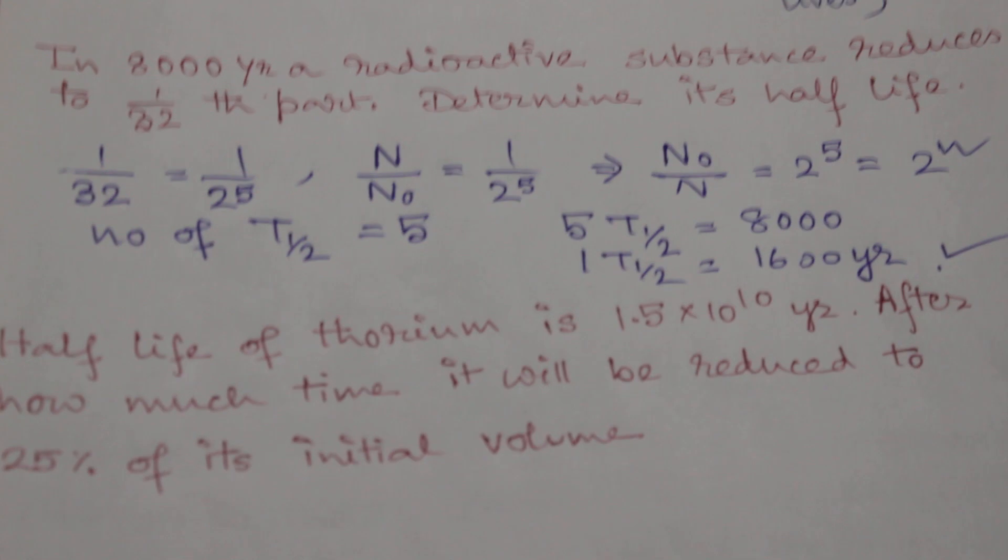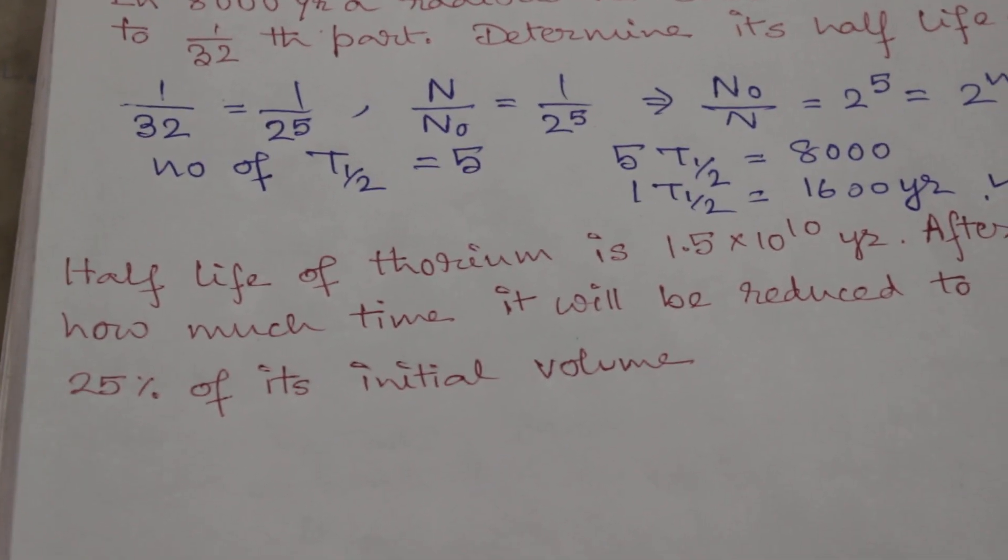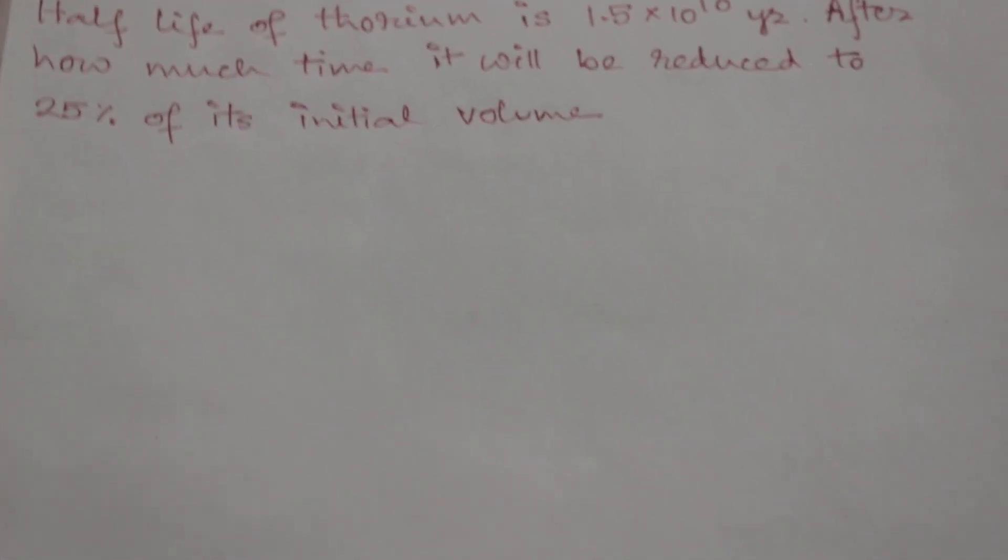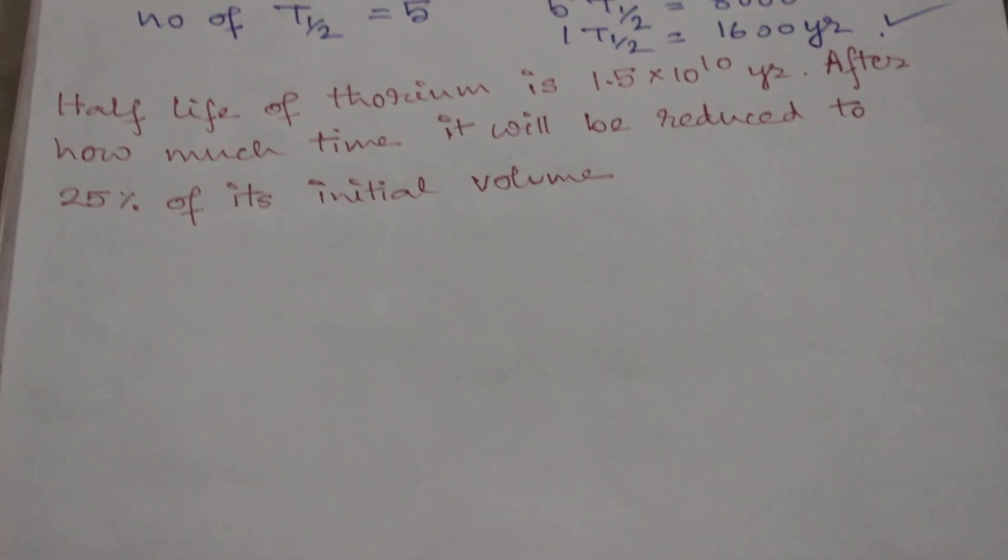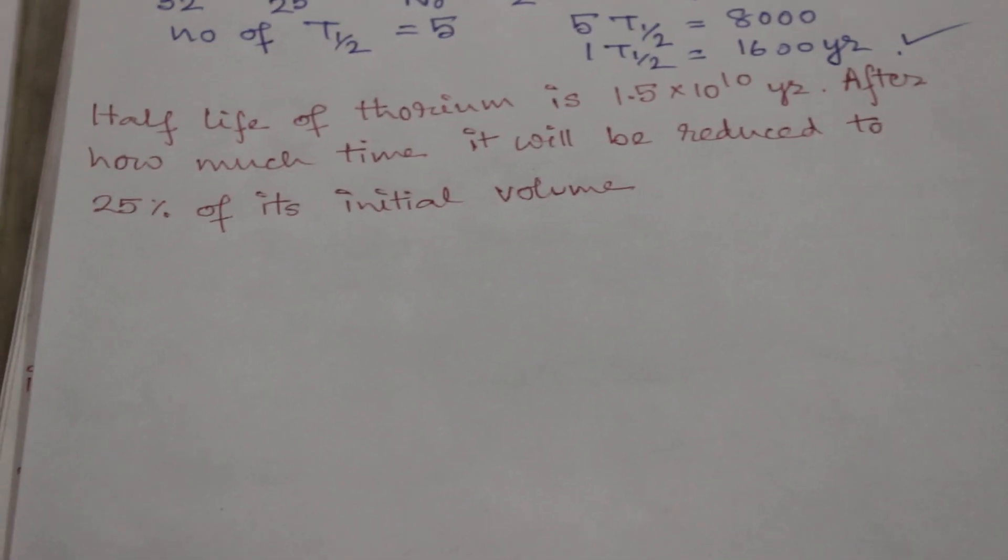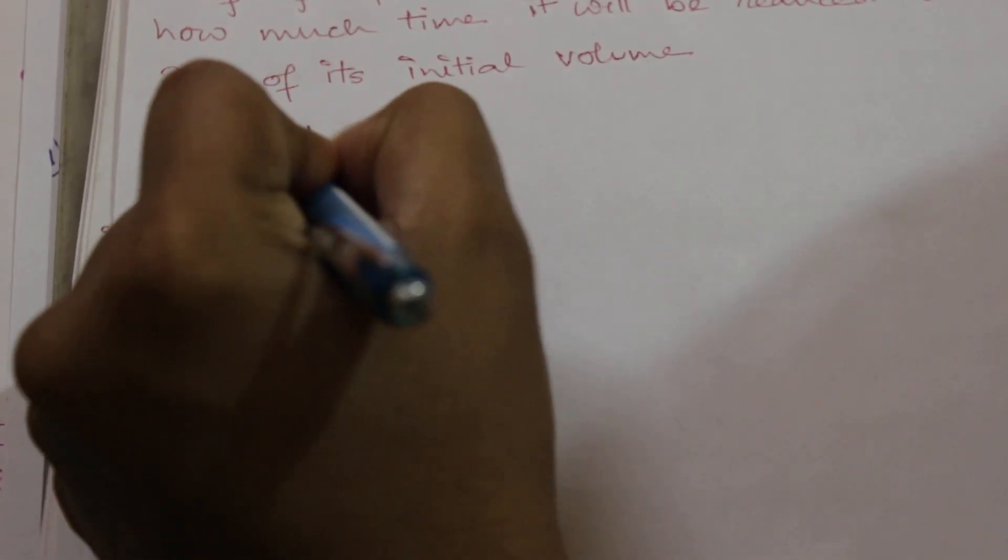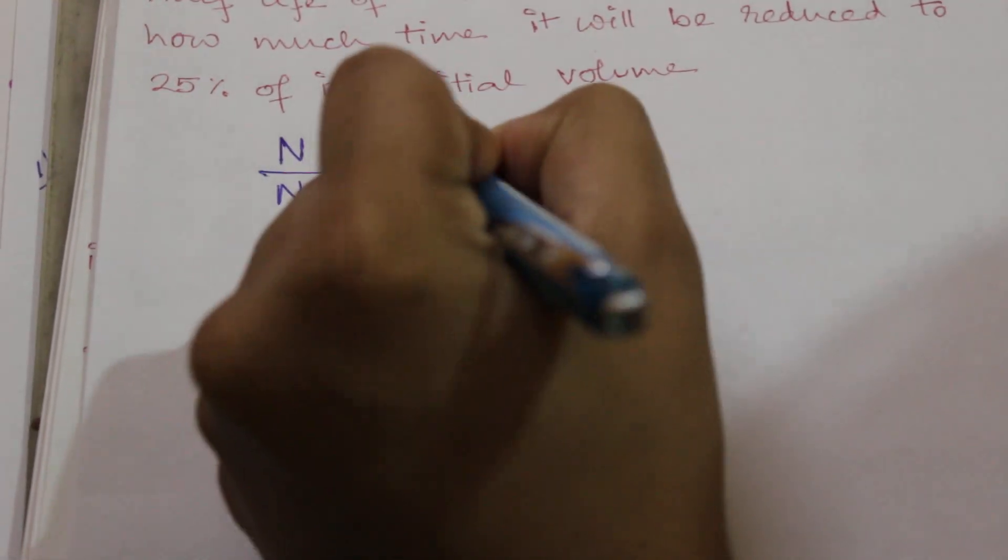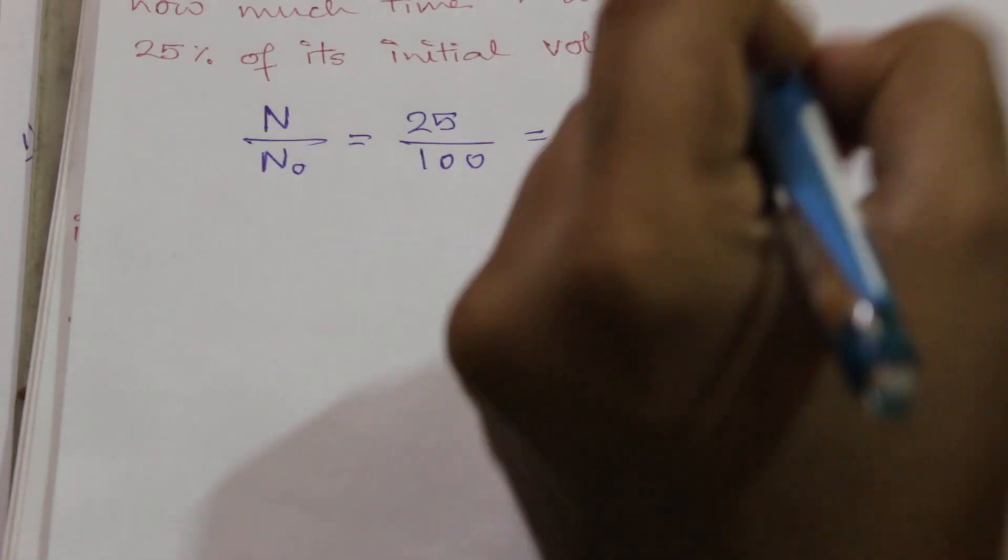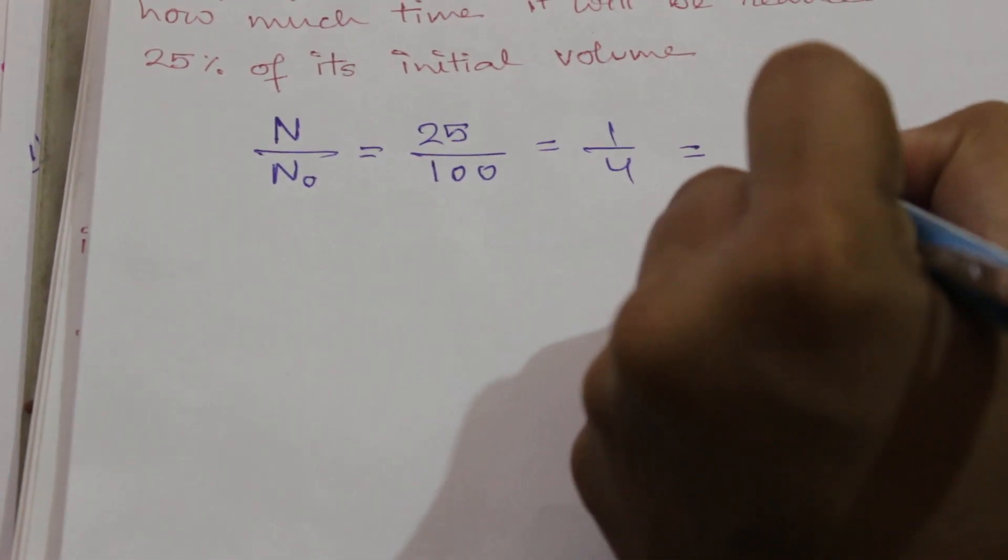Let us take one more example. Half-life of thorium is 1.5 times 10 to the power 10 years. After how much time will it be reduced to 25 percent of its initial volume? So N by N₀ is 25 percent, that means 25 by 100, that means 1 by 4, that is equal to 1 by 2 squared.